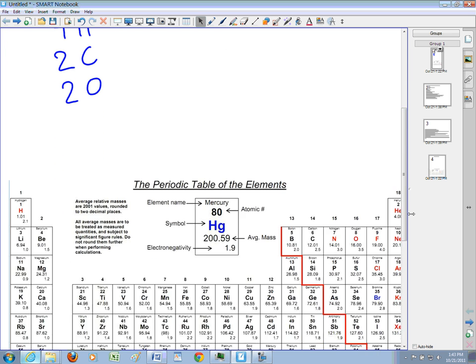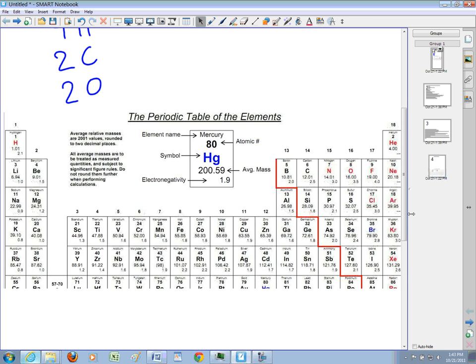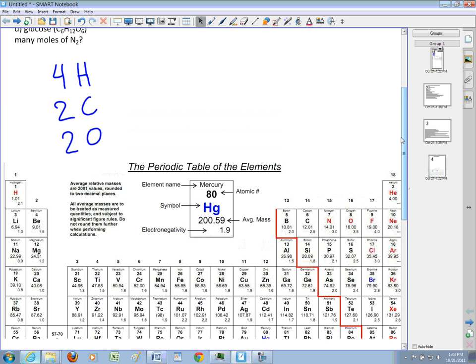I'm just going to scroll down. I have a periodic table - we need to know what the atomic masses are of these different elements. If I look at hydrogen, for example, hydrogen has a mass of 1.01. So if I'm calculating hydrogen, there's four of them, so 4 times 1 is 4. Carbon has a mass of 12.01, very close to just 12. There are two carbons in my molecule, so 2 times 12 is 24.